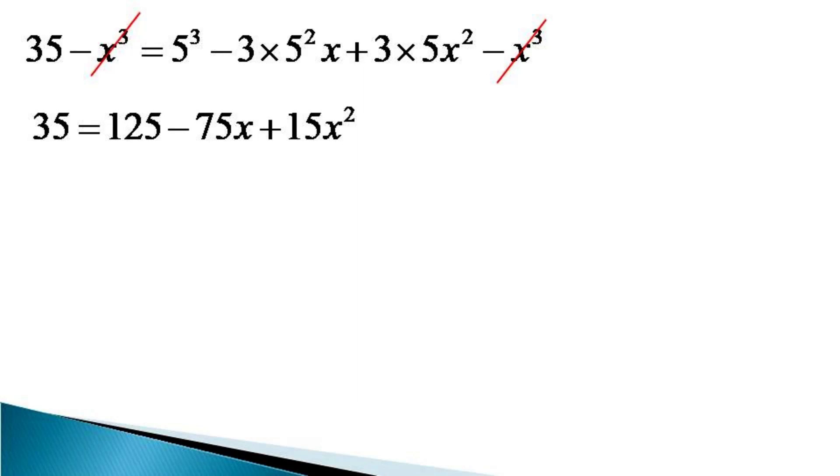After simplifying the coefficients of x and x square, we bring all the terms on one side to get the equation as 15x square minus 75x plus 90 is equal to 0. To simplify it further, we divide both sides by 15 to convert the equation as x square minus 5x plus 6 is equal to 0.